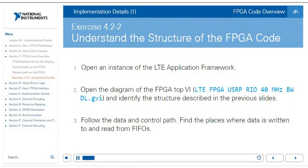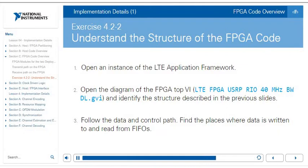In exercise 4.2.2, go back to the LTE application framework and open the diagram for the FPGA top-level VI 'LTE FPGA USRPRIO 40MHz bandwidth downlink.gvi.' Identify the structures as described, follow the data and control paths, and find the places where data is written to and read from FIFOs so you can follow the flow of data to the FPGA and between clock domains.